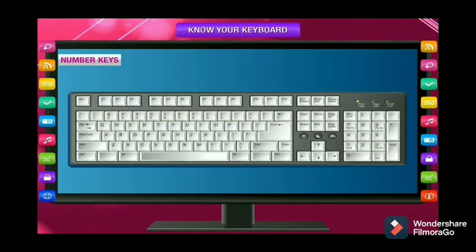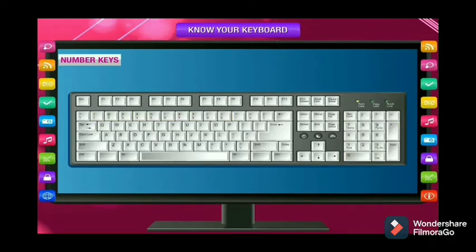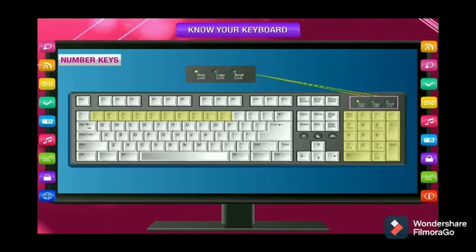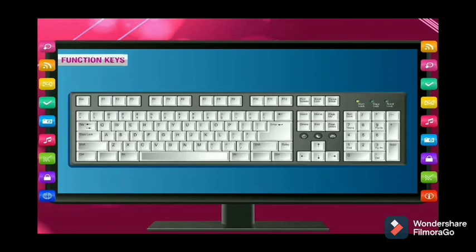Number keys are found in two places on a keyboard — one on the top of the alphabet keys and another on the right-hand side. The right-hand side keypad is used more frequently than the upper keys. The digits on the number keys are from 0 to 9 and are used for writing numerics on the monitor screen. The right-hand side keypad can be used when the number lock is on.